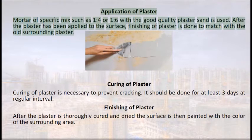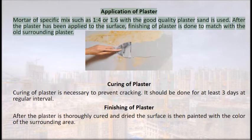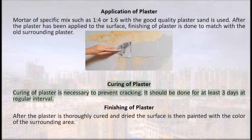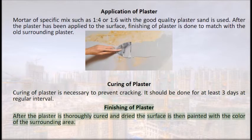Application of plaster: mortar of specific mix such as 1:4 or 1:6 with good quality plaster sand is used. After plaster is applied, finishing is done to match with the old surrounding plaster. Curing of plaster is necessary to prevent cracking and should be done for at least 3 days at regular intervals. After curing and drying, the surface is then painted with the color of the surrounding area.